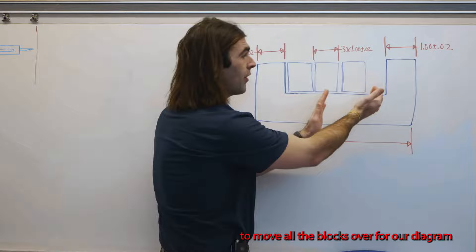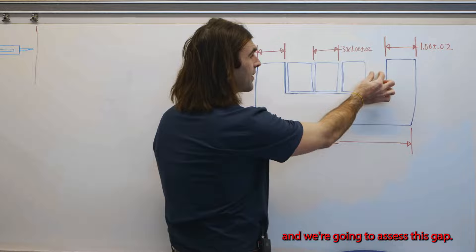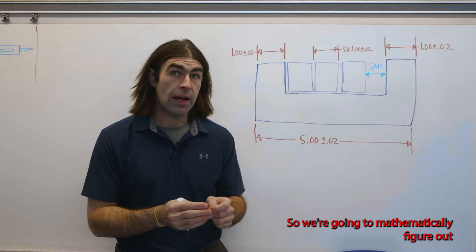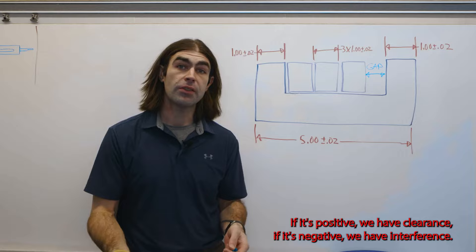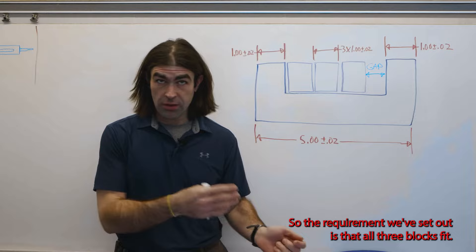Now, the way we figure out how much clearance it is, is we're going to move all the blocks over for our diagram and we're going to assess this gap. So we're going to mathematically figure out if that gap is positive or negative. If it's positive, we have clearance. If it's negative, we have interference.